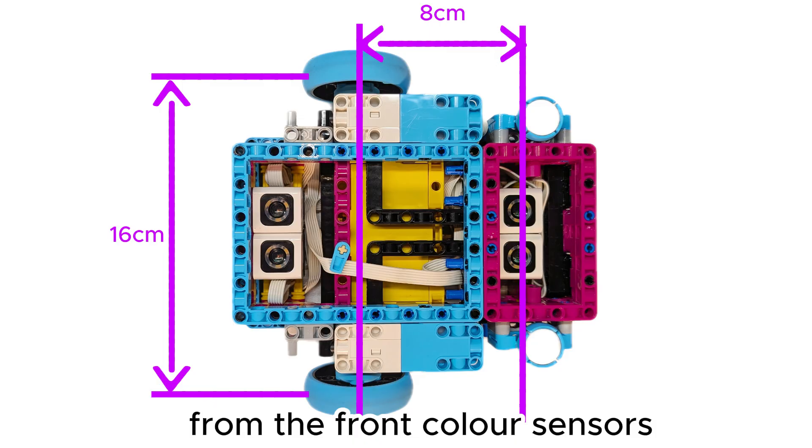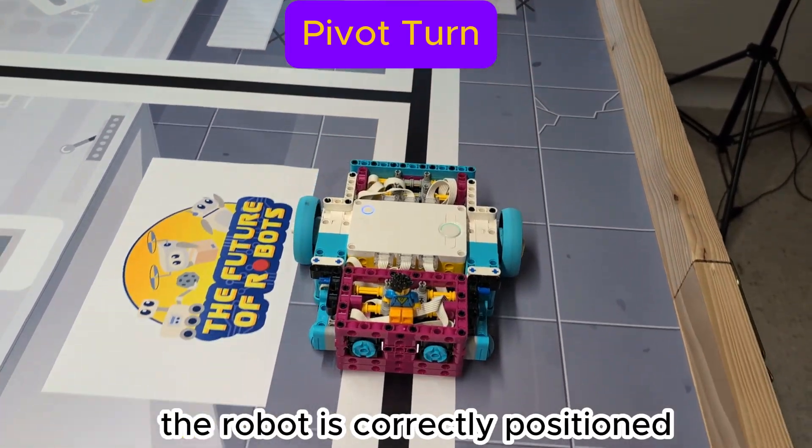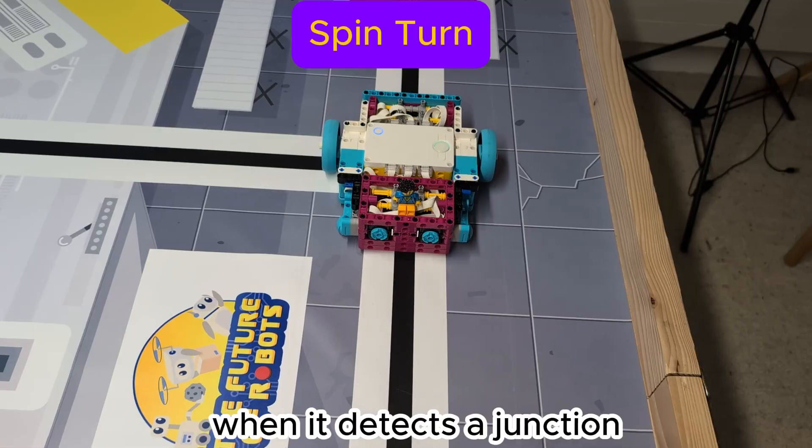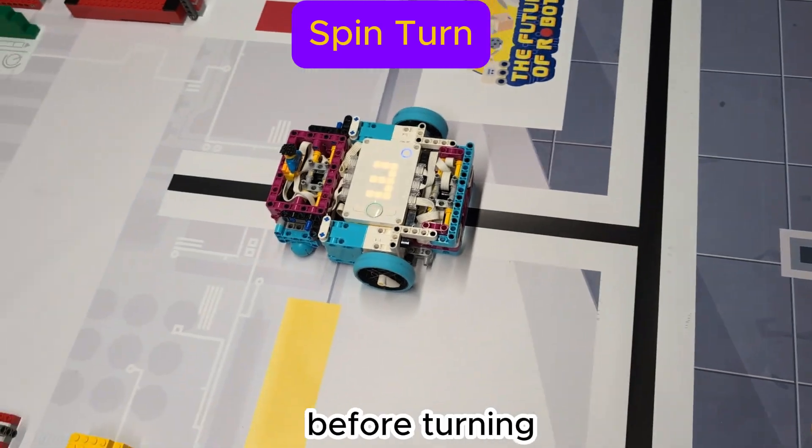The distance from the front color sensors to the wheels is 8 centimeters, half the distance from wheel to wheel. Because of this the robot is correctly positioned for a pivot turn when it detects a junction. For a spin turn it has to drive 8 centimeters further before turning.